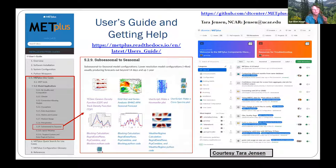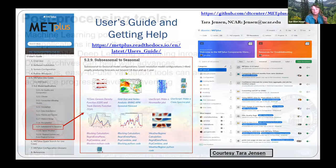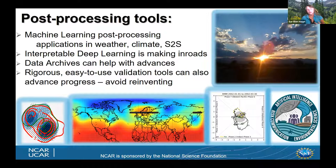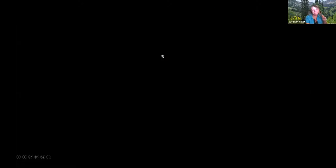In summary, these tools are making it easier to make progress in many areas — both weather, climate, and S2S. These machine learning tools show that interpretable deep learning is making inroads, data archives can really help advance the science, and these rigorous, easy-to-use validation tools mean you don't have to reinvent the wheel and recode the same validation. These tools have been highly vetted, debugged multiple times, and are used by 3,500 users, so you can count on them being accurate. Thank you.